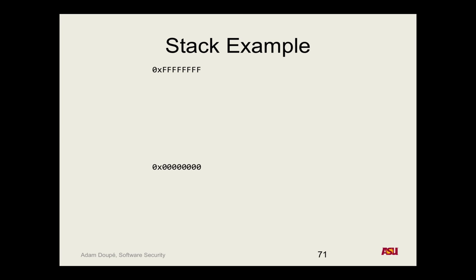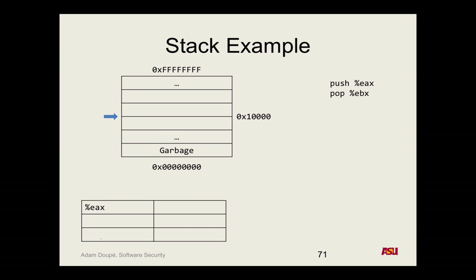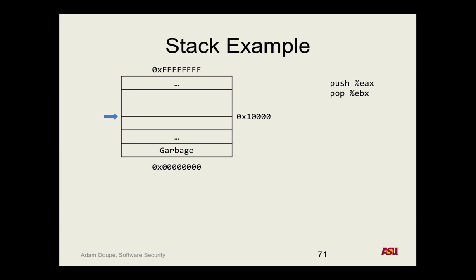Let's look at a stack example — all F's at the top. You could draw it either way, but going down makes more sense. If the stack pointer is pointing at memory location 0x10000, this means the stack pointer must have the value 0x10000 inside it.